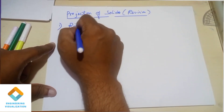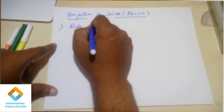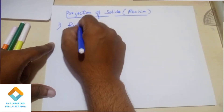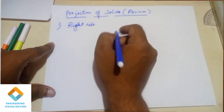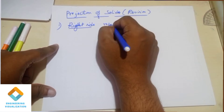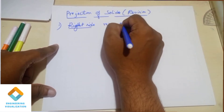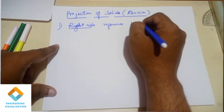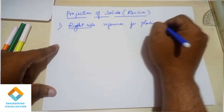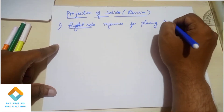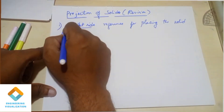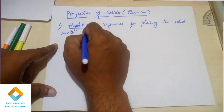This is the projection of solids. This is very important. First, this is the right-hand side reference. This is the right-hand side reference. This is the right-hand side reference — this is the edge corner position.